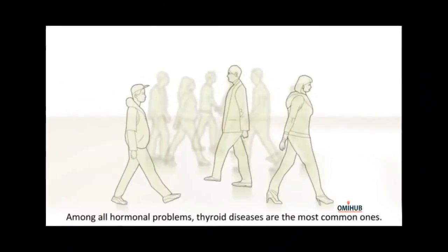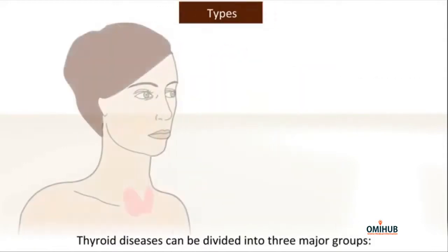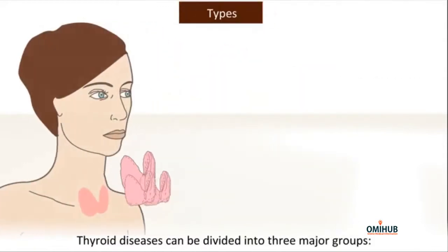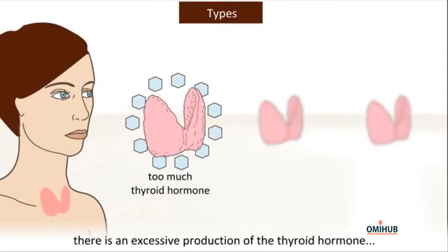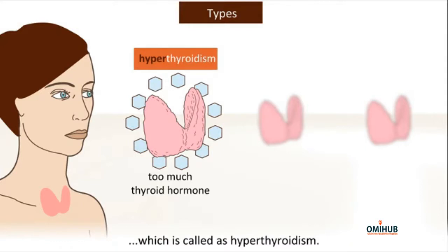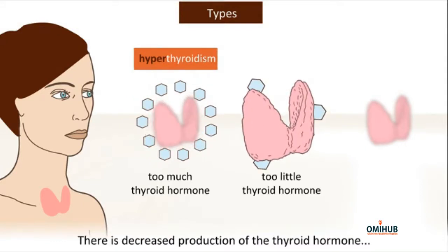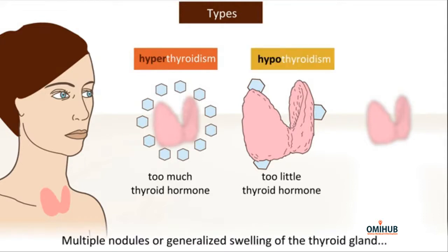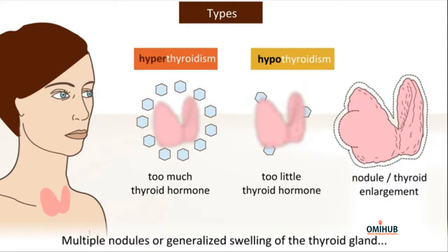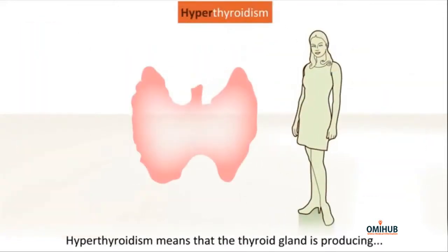Among all hormonal problems, thyroid diseases are the most common ones. Thyroid diseases can be divided into three major groups: excessive production of thyroid hormone, called hyperthyroidism; decreased production, called hypothyroidism; and multiple nodules or generalized swelling of the thyroid gland, called a goiter.